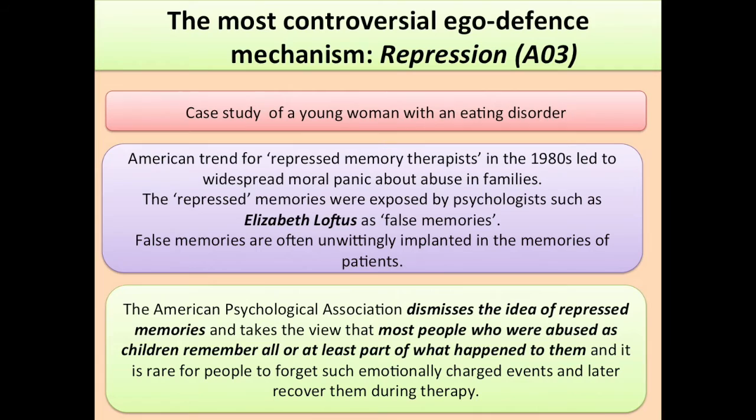The fourth evaluation point is a big criticism, and it specifically comes from Elizabeth Loftus, who you know from your year one studies to do with memory. Loftus has done a lot of scientific work to discover that you can actually implant false memories in people. She was specifically looking at the idea of repression and repressed memories, and in the 1980s there was a trend in America for people to go to therapy to uncover repressed memories. All these incidences of child abuse came out — people suddenly remembering child abuse from their childhood that they'd never remembered before. But Elizabeth Loftus claimed from her research that it wasn't repressed memories; it was actually implanted false memories from the therapist, possibly accidentally.